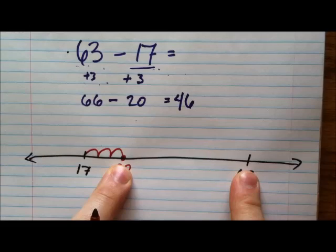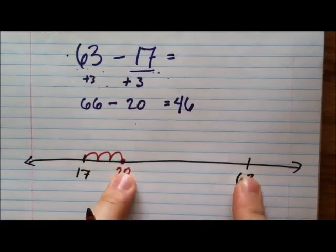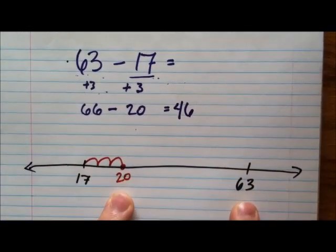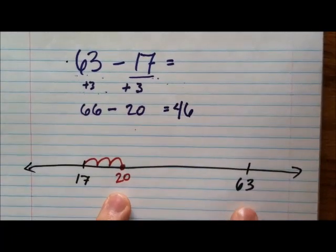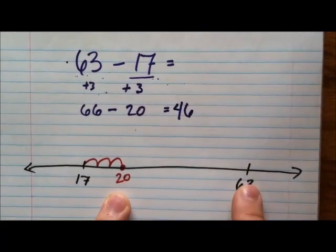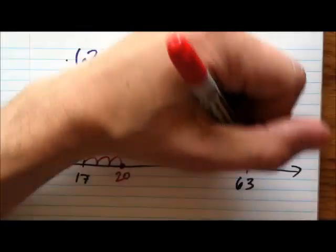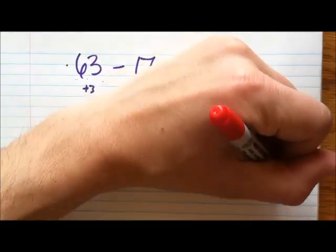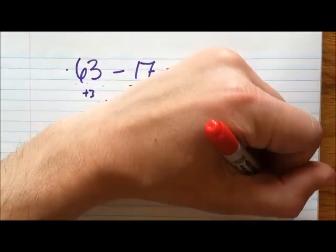The distance has changed now. The distance has gotten shorter by 3 between 63 and 20. So I've got to keep the distance between them the same. So what that means is I have to make 63 go positive three spaces. 1, 2, 3. So now it's at 66.